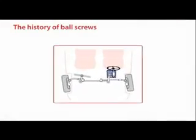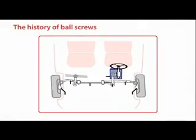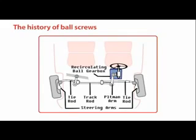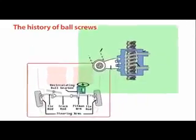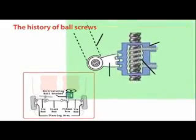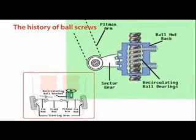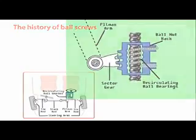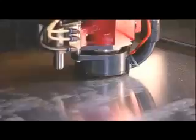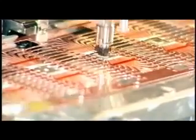The first attempt to place ball bearings between a nut and screw, replacing sliding friction with rolling friction, was made in 1898. Ball screws were applied to automotive steering systems in the 1940s, and subsequently were used in many kinds of industries, including the machine tool and semiconductor industries.